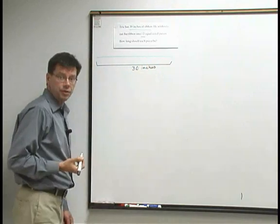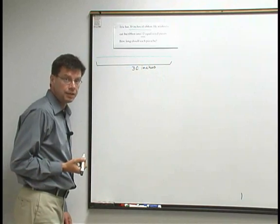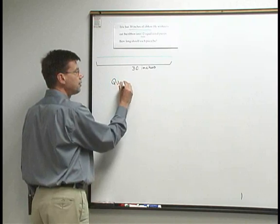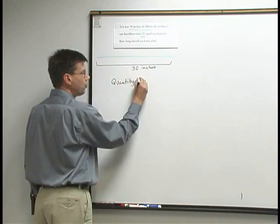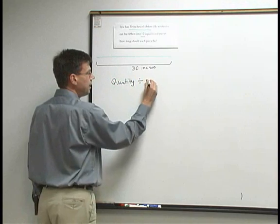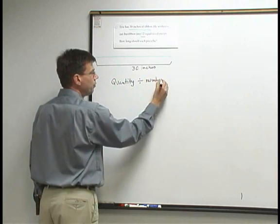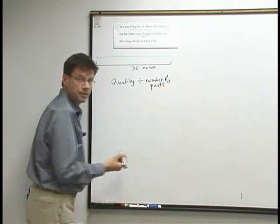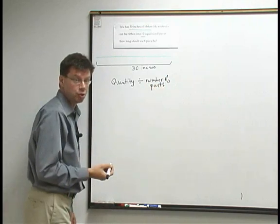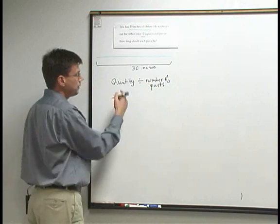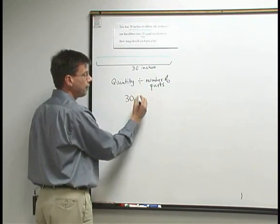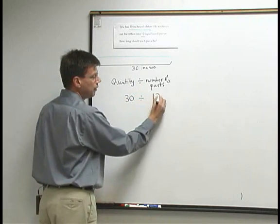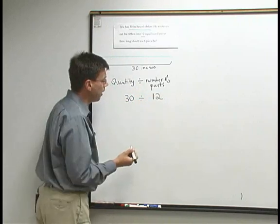This is another situation where we're taking a quantity and dividing it into parts. The quantity here is the total length of ribbon. The quantity divided by the number of parts will give us the size or the length of each piece. The quantity is the 30 inches of ribbon, the total length of the ribbon, divided by 12, that's the number of pieces of ribbon that we want.